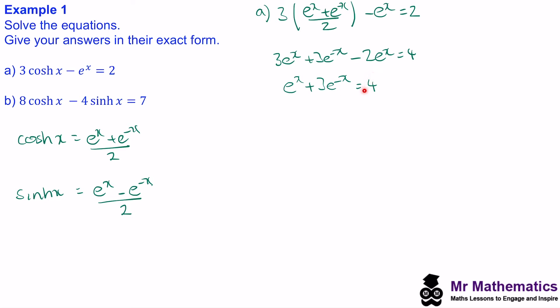We can make this equation equal to 0 by moving the 4 to the left-hand side, so e to the x plus 3e to the minus x minus 4 equals 0. We need to cancel out this e to the negative x, and we can do this by multiplying both sides by e to the x. So e to the x squared becomes e to the 2x, and e to the x times e to the negative x gives e to the 0, which is 1, so that term becomes 3. Then we have minus 4e to the x, equal to 0.